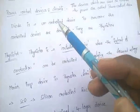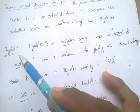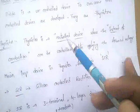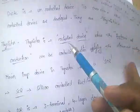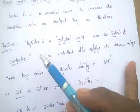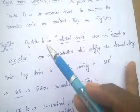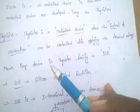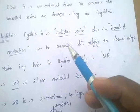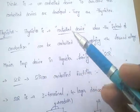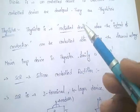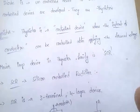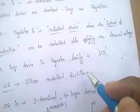Coming to the thyristor: a thyristor is a controlled device where the instant of conduction can be controlled after applying the forward voltage, gate signal, or firing signal.